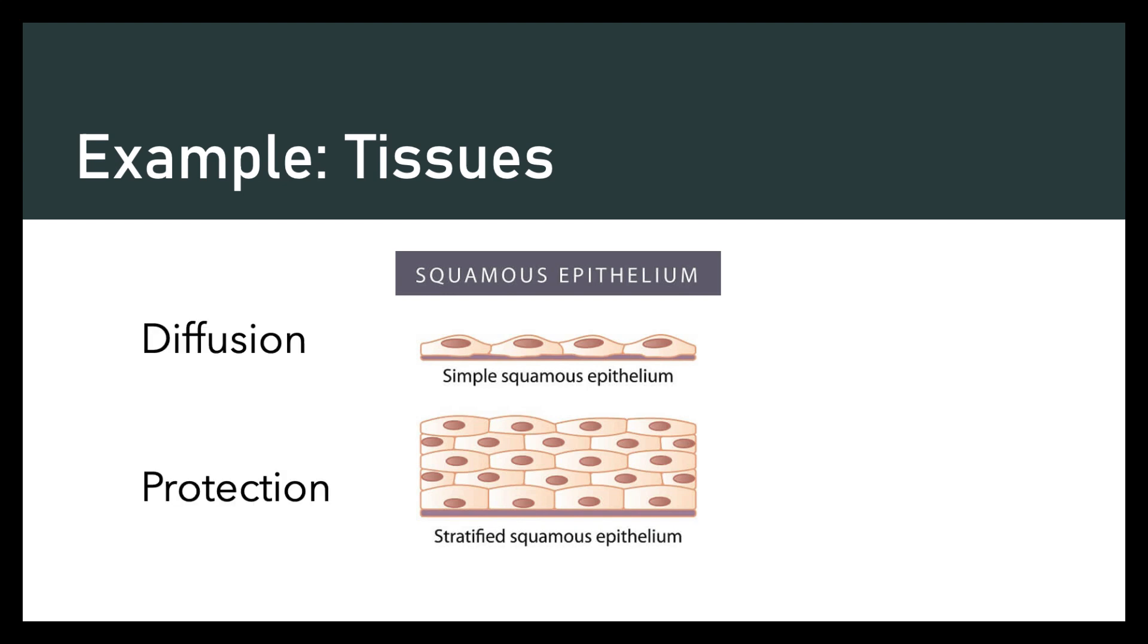If you said the top one would allow things to move through it quickly, you'd be right. That's the process known as diffusion. And if you said the bottom one would be better at protecting tissues underneath, you'd be right. That's protection. See how the structure is going to help them do their job.